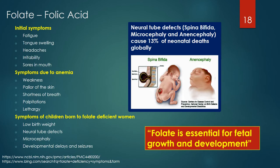Folate, or vitamin B9, also provided in another form as folic acid, is essential in the earliest days of fetal growth for healthy development of the fetal brain and spine. Neural tube defects are serious birth defects affecting an estimated 300,000 births each year worldwide, causing approximately 13% of neonatal deaths attributed to birth defects in low-resource countries. Neural tube defects commonly result in infant paralysis if the child survives. A majority of these defects are preventable with adequate folic acid consumption during the preconception period and throughout the first few weeks of gestation. Neural symptoms of folate deficiency include fatigue, tongue swelling, headaches, irritability, and sores in the mouth.